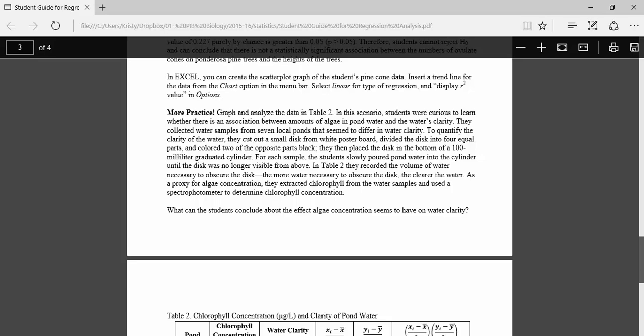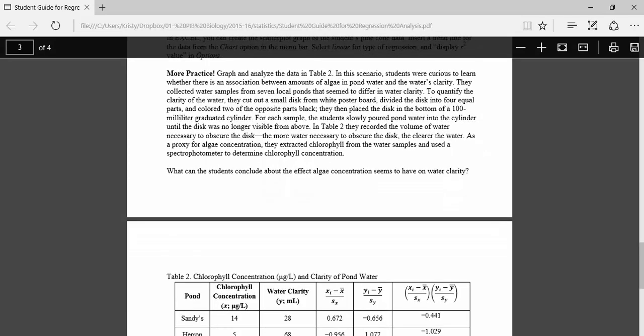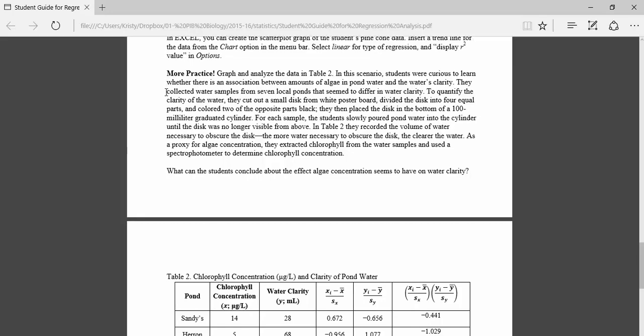So now let's discuss the practice problem. Here in this scenario, students were curious to learn whether there is an association between amounts of algae in pond water and water's clarity. They collected water samples from seven local ponds that seemed to differ in water clarity. By water clarity, it means how clear the water is. Does it seem foggy? Does it seem like you can see farther down?